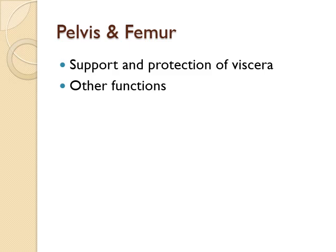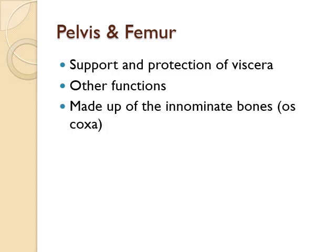The pelvis and femur support and transfer the weight of the head, neck, and trunk to the femurs in standing and to the ischial tuberosities in sitting. The pelvis is made up of the innominate bones—the ilium, ischium, and pubic bones—which rotate during walking to create a rhythmic pelvic swing. The pelvis also serves as a broad area for muscular attachment for hip and abdominal muscles.